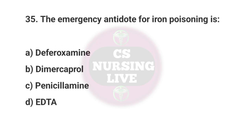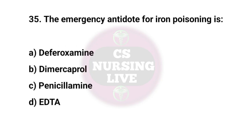Question No. 35. The emergency antidote for iron poisoning is? Right answer is A. Deferoxamine.